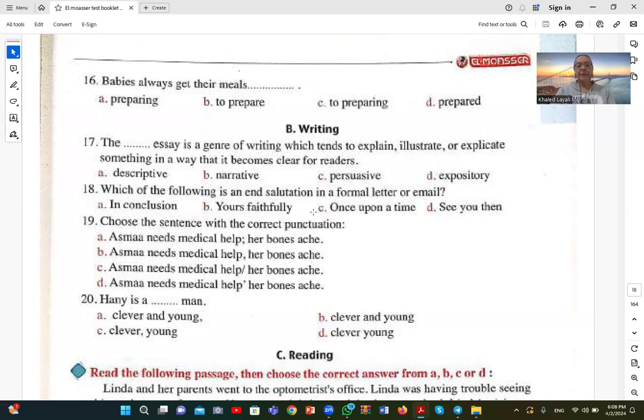Number nineteen: Choose a sentence with the correct punctuation. 'Asma needs medical help; her bones ache.' There are two sentences, and we use a semicolon after 'help' to explain - she needs medical care because her bones hurt. So A is the correct answer.